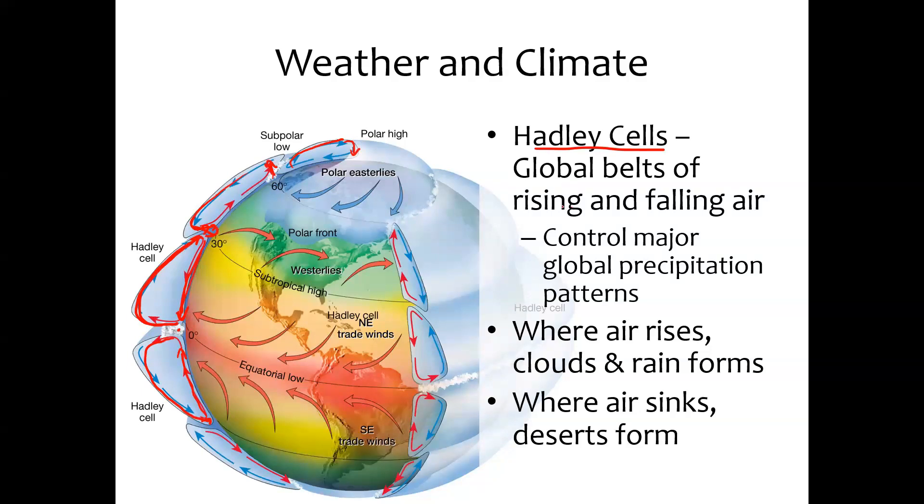These patterns of rising and falling air control major global precipitation patterns. Where air rises, it takes all of its moisture from evaporation with it, rises, cools off, and forms clouds and rain. Tropical air is hot, full of moisture, it rises and forms thunderstorms. You get lots of water in the atmosphere near the tropics that rains out as big thunderstorms.